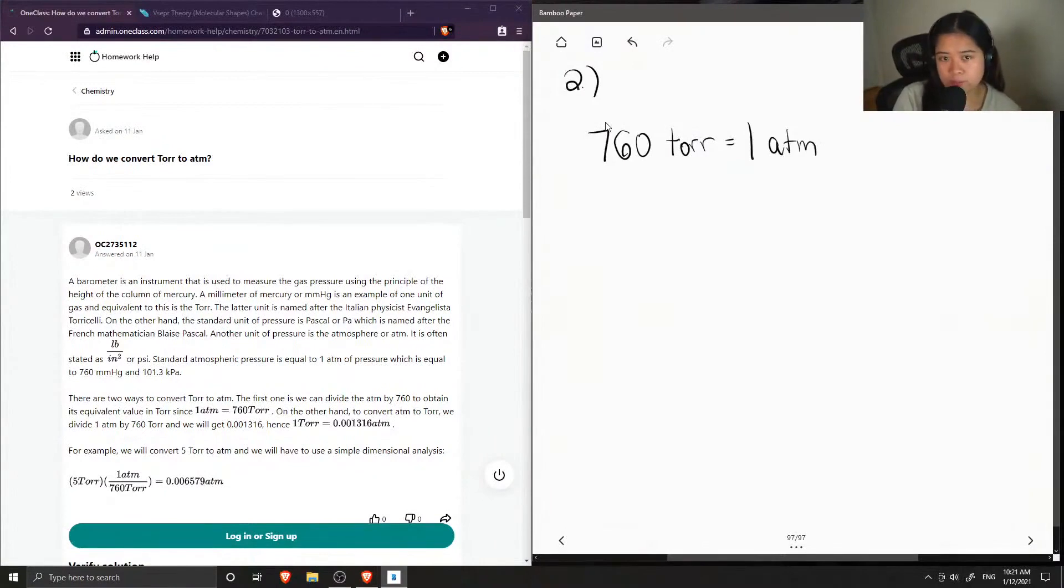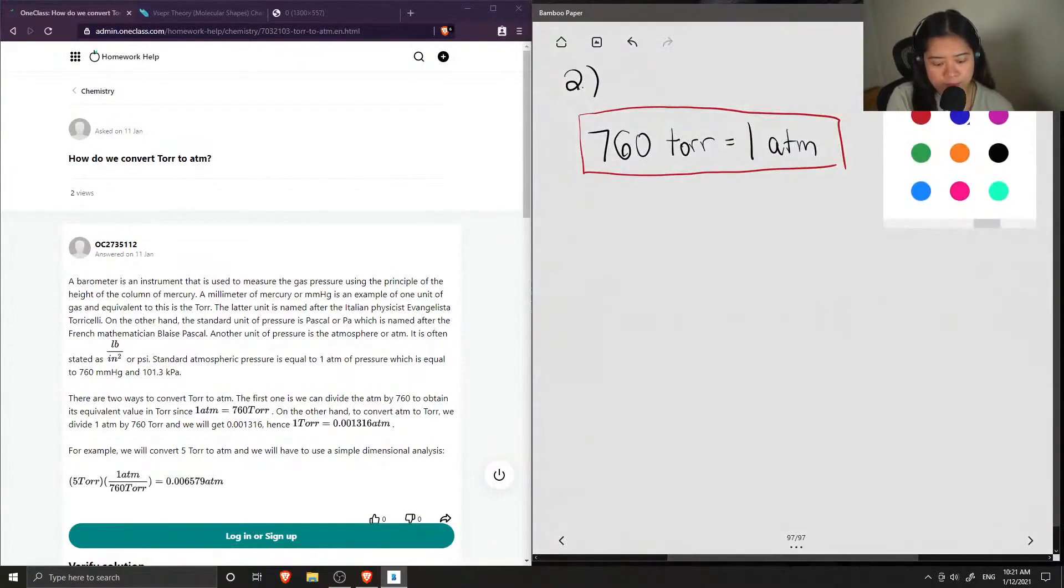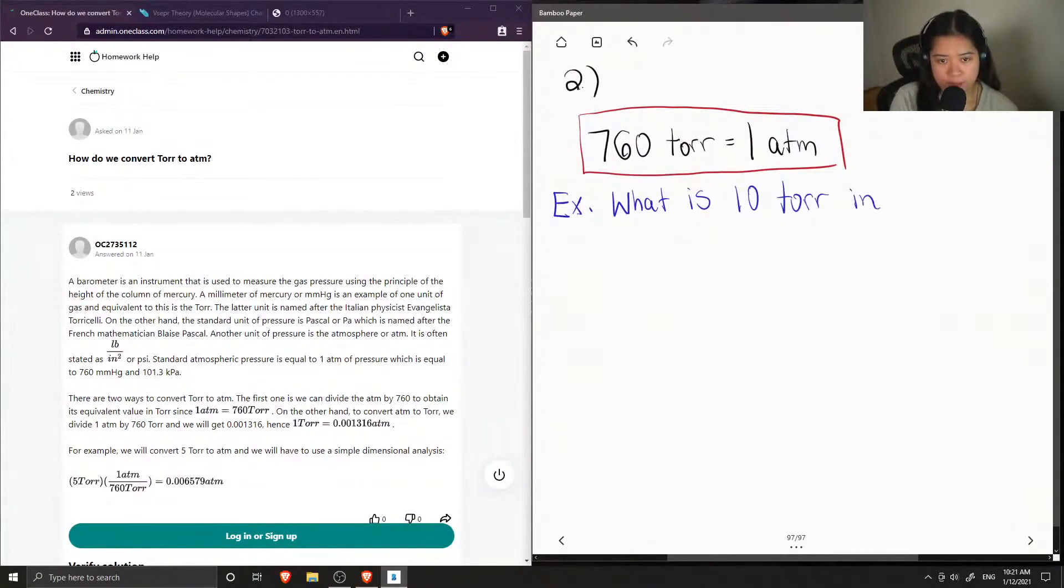So if we remember this conversion factor, then this will help us in converting TOR to ATM. So now let's have an example question. For example, what is 10 TOR in ATM?